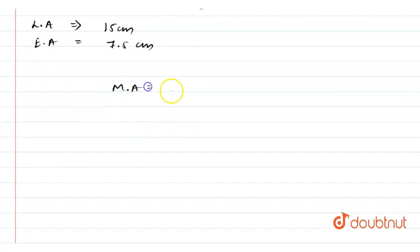So our mechanical advantage is effort arm divided by load arm. So our effort arm is 7.5 and our load arm is 15. So by solving this we'll get the mechanical advantage will be equals to half, so it will be equals to 0.5.